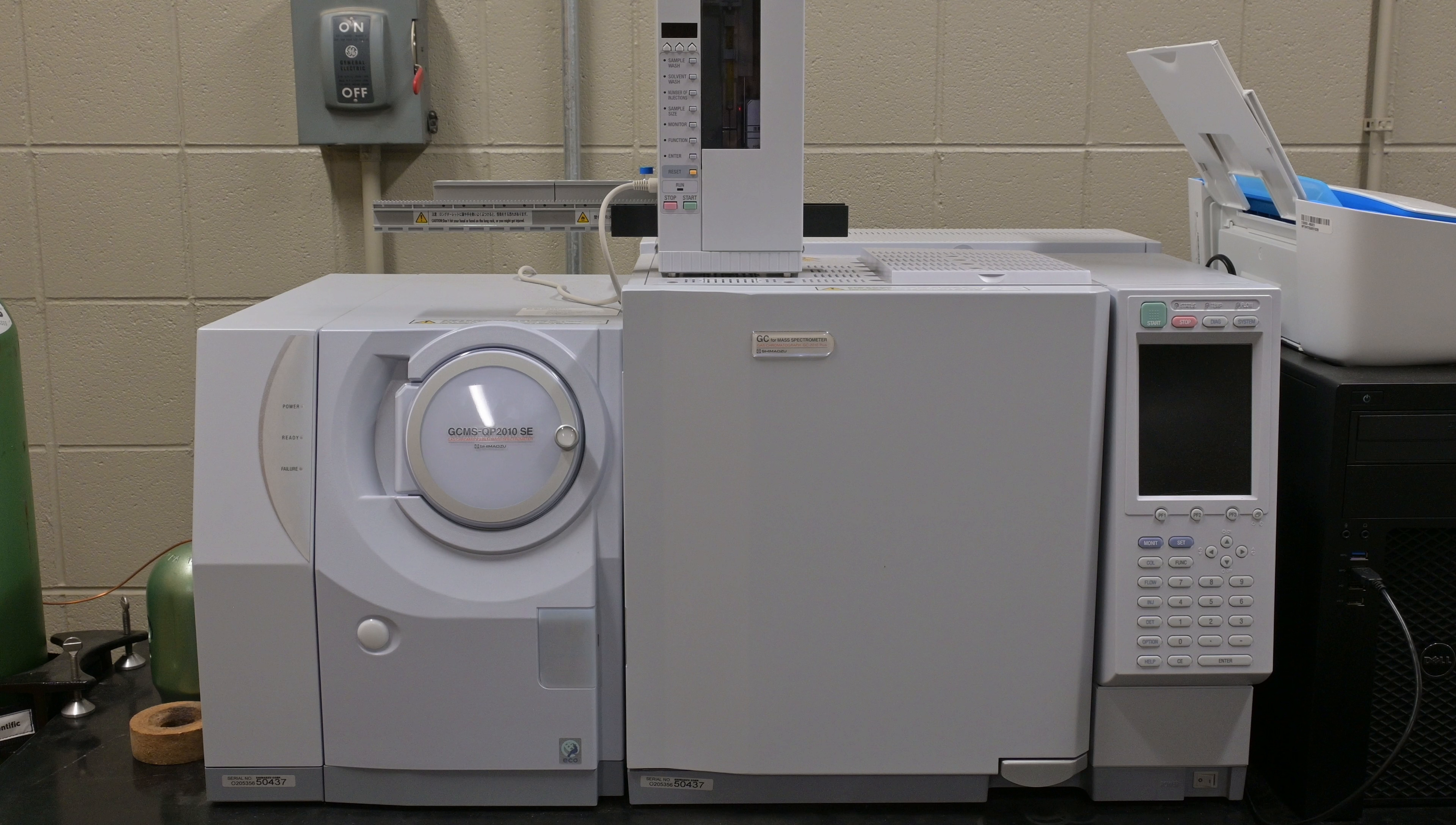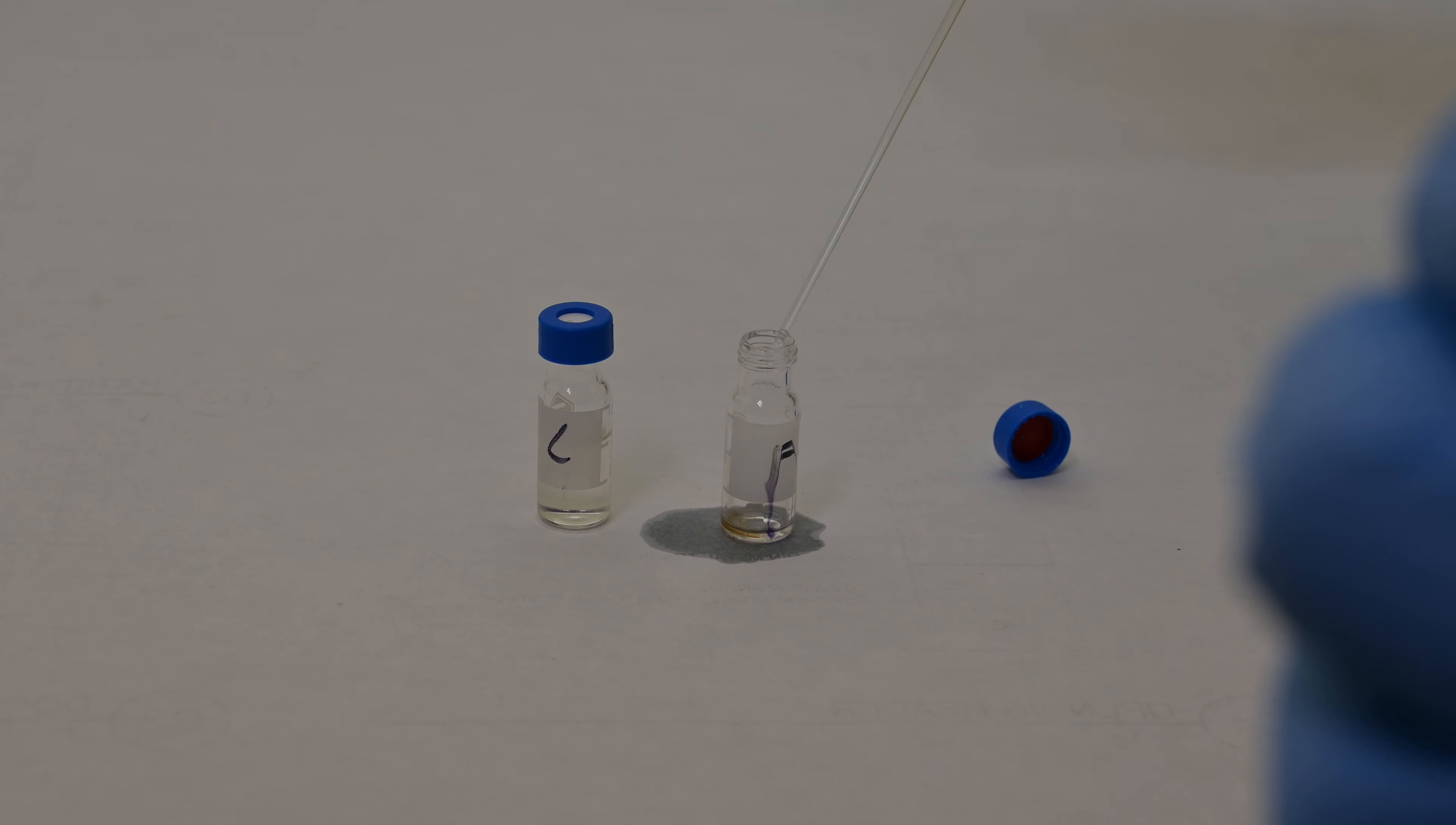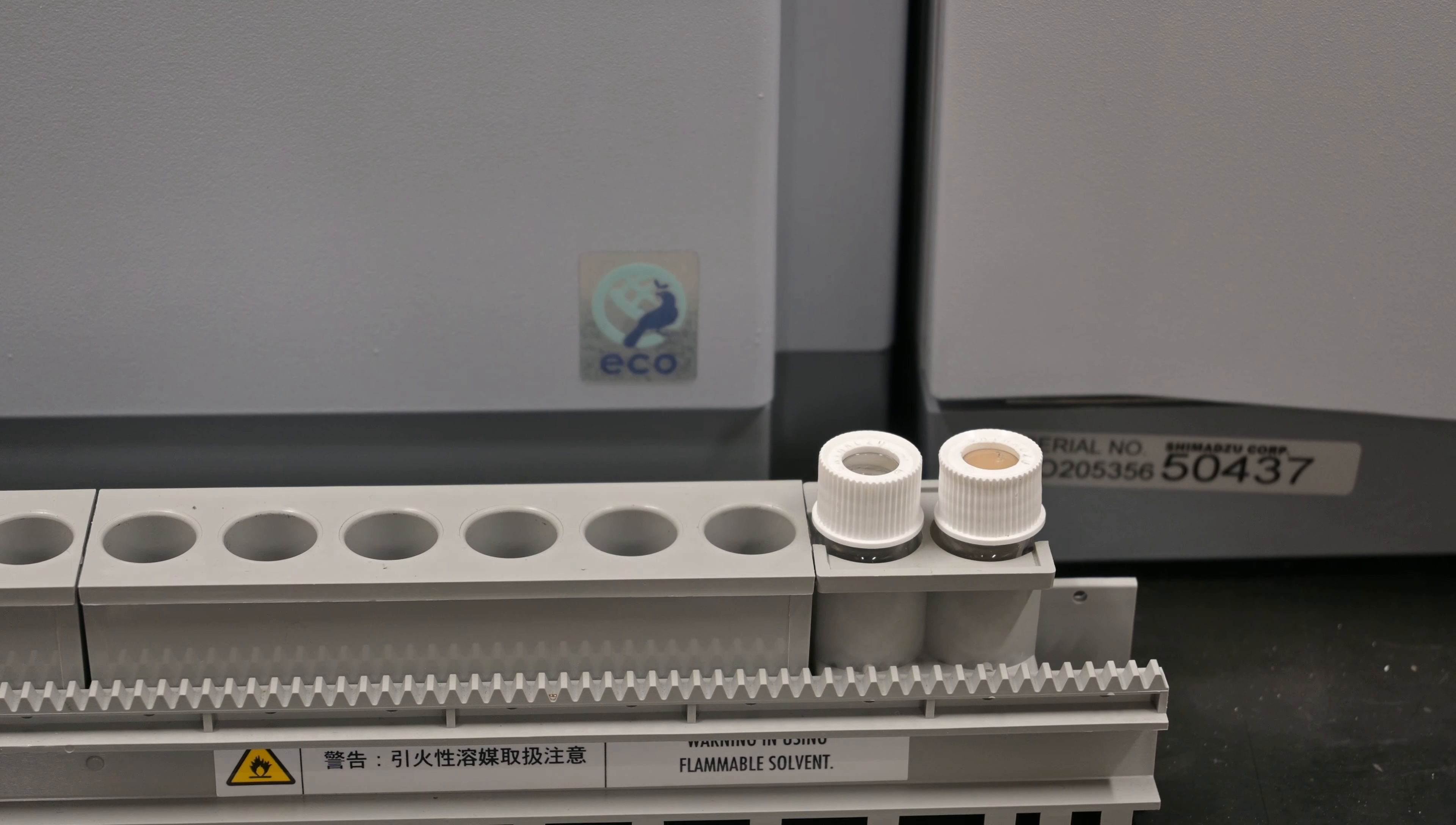With GC-MS, we can confirm not only the presence of DEET in our synthesized product but also its purity and any potential impurities. This level of detail is crucial for ensuring the effectiveness and safety of the bug spray we've created. Now let's take our final product to the GC-MS and see the results of our hard work. A small sample was taken from the beaker and transferred to a GC-MS vial, where it was dissolved in some dichloromethane, after which it was loaded into the instrument and ran.